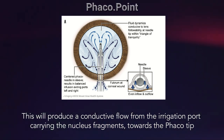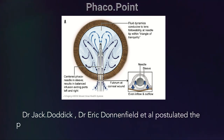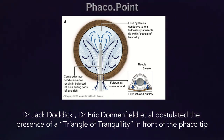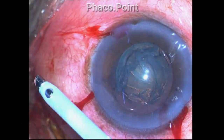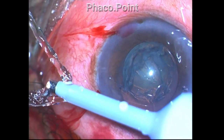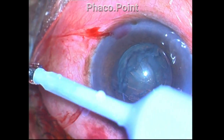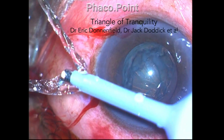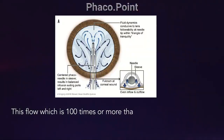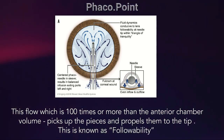According to Dr. Dodick and Dr. Donnenfeld, there exists something known as the triangle of tranquility just in front of the tip, from which the nuclear fragments get sucked into the phaco tip, generated by the flow of fluid. This high-pressure chaotic flow gets organized in the center just anterior to the tip — the triangle of tranquility. As the pieces come into this zone, they get easily aspirated into the phaco tip. The flow, which is about 100 times the volume of the anterior chamber, helps to pick up the pieces and propel them to the tip.